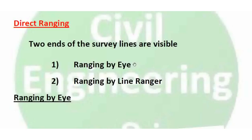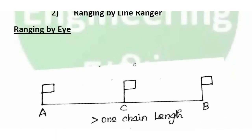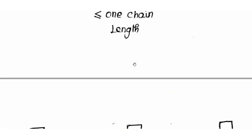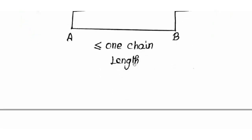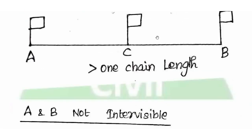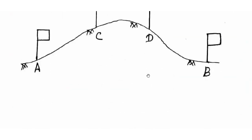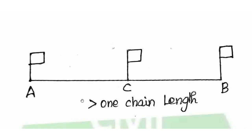In Direct Ranging, there are two methods: Ranging by Eye and Ranging by Line Ranger. When A and B points are visible, we can perform direct ranging and fix intermediate points between them.